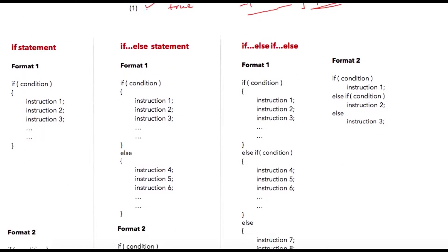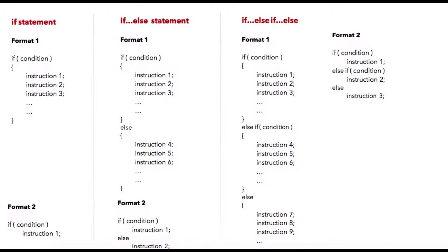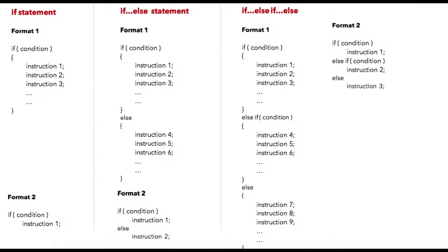Now let us check the syntax. This is the general if statement Format 1. As an example, if inside of parenthesis I am writing condition, if the condition is true all these instructions will be executed. This whole part is my if block. If my condition is false, this whole block will be skipped - it will not get executed at all.